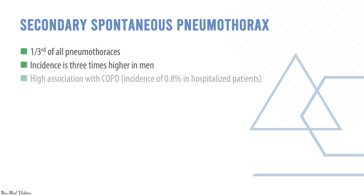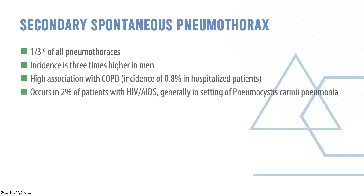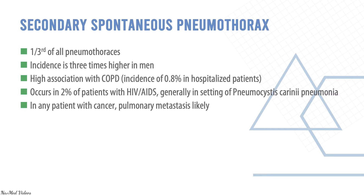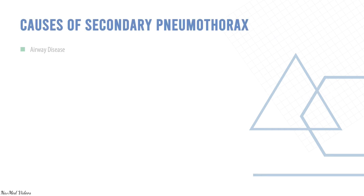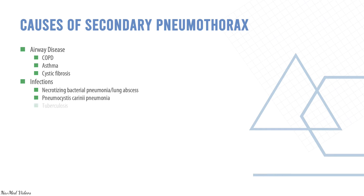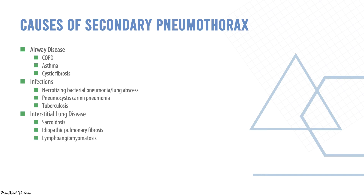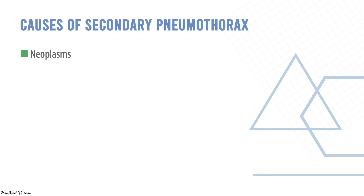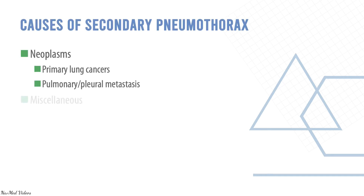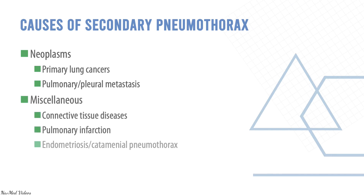In any patient with cancer, pulmonary metastasis is likely. Causes of secondary spontaneous pneumothorax include airway diseases like COPD, asthma, and cystic fibrosis; infections like necrotizing bacterial pneumonia, lung abscesses, Pneumocystis carinii pneumonia, and tuberculosis; interstitial lung diseases like sarcoidosis, idiopathic pulmonary fibrosis, lymphangioleiomyomatosis, tuberous sclerosis, and pneumoconiosis; cancers like primary lung cancer or pleural metastasis; and miscellaneous causes like connective tissue diseases, pulmonary infarctions, and endometriosis.